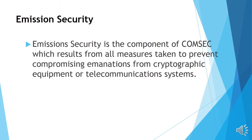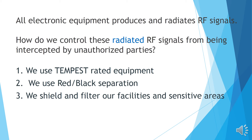The next element of COMSEC is emission security. Emission security is the component of COMSEC which results from all measures taken to prevent compromising information from cryptographic equipment or telecommunication systems. All electronic equipment produces and radiates RF, or radio frequency, signals. To control radio frequency signals from being intercepted by unauthorized parties, we use TEMPEST-tested related equipment, red/black separation, and we shield and filter our facilities and sensitive areas.